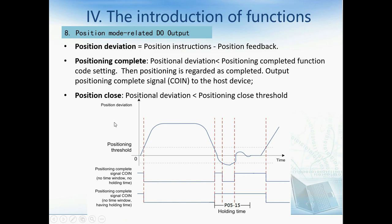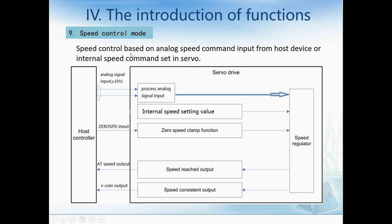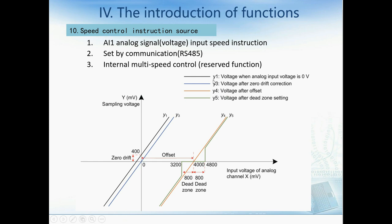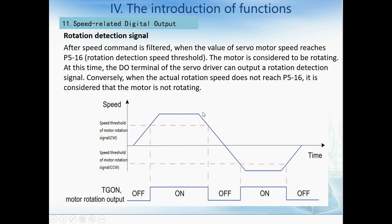Now let's talk about speed control mode. Speed control is based on the analog speed command input from the host device, or the internal speed command set in the servo. There are three sources: the first is analog input, the second is communication via RS-485, and the third is internal speed control — this function is currently reserved. Regarding speed-related digital output: after the speed command is filtered, when the servo motor speed reaches the rotation detection speed threshold, the motor is considered rotating and the servo driver outputs a rotation detection signal. Conversely, when the actual rotation speed doesn't reach the setting value, the motor is considered not rotating.